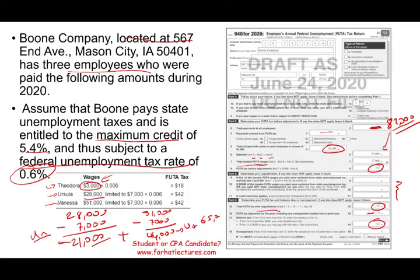This is basically how FUTA works. Remember, this annual federal unemployment form (Form 940) is due no later than January 31st — one month after year end. This is just an informational form.